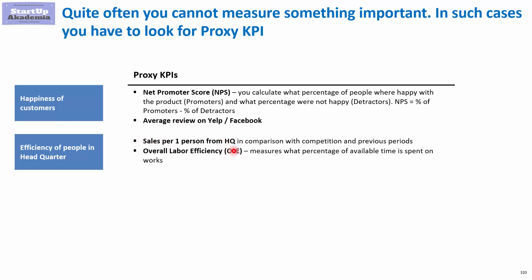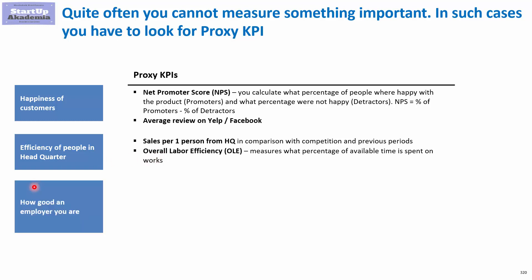Or you can look at something called Overall Labor Efficiency, which shows you what percentage of the time is actually devoted to real productive work. On the basis of that you can know how efficient people are.